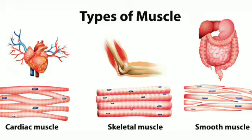Next is smooth muscles. These are involuntary muscles which are present in the internal vital organs other than the heart. Example: muscles of the stomach, intestine, blood vessels, uterus, etc. are called smooth muscles. They carry out many vital functions of our body such as breathing and movement of the alimentary canal.